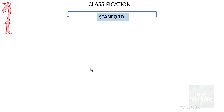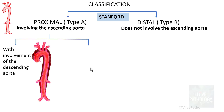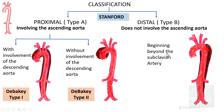Aortic dissections are classified using the Stanford classification into type A and type B. Type A involves the ascending aorta, whereas type B does not involve the ascending aorta. Type A is further categorized using the DeBakey system: DeBakey type 1 involves the dissection extending to the descending aorta, and DeBakey type 2 involves only the ascending aorta. The distal type — DeBakey type 3 — is where the dissection begins beyond the subclavian artery.